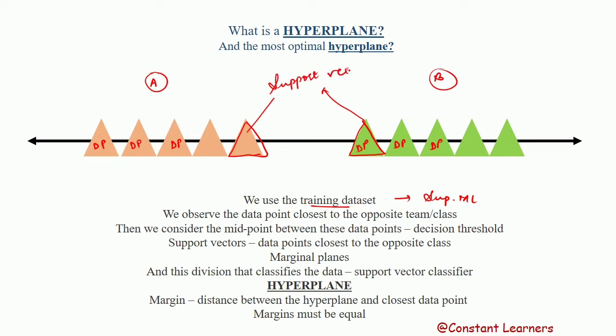And hence we have the name support vector machine, because the support vectors help us to identify the most optimal hyperplane. Support vectors play an important role in support vector machine, as they play a major role in identifying the most optimal hyperplane.